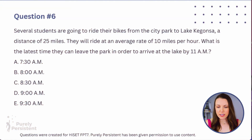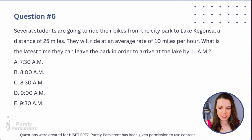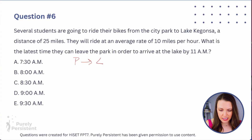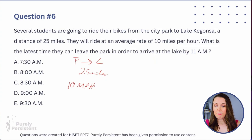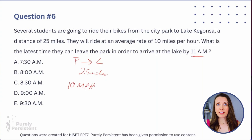Several students are going to ride their bikes from the city park to Lake Kegonza — a distance of 25 miles. They will ride an average of 10 miles per hour. What is the latest time they can leave the park in order to arrive at the lake by 11 a.m.? So the first thing we need to do is figure out how long it's going to take them to go from the park to the lake.